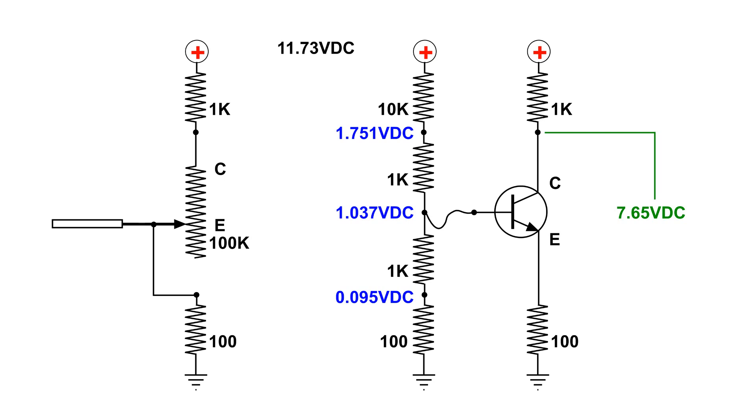Next I connected the base to the 1.037 volt connection. The collector on the transistor read 7.65 volts, so I adjusted the variable resistor accordingly so it would read the same. Then I measured the ohms between E and C and found that it was 2.1k ohms, which means between the emitter and collector of the transistor, it is also 2.1k ohms.